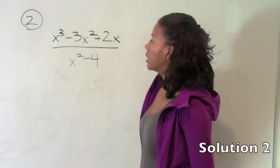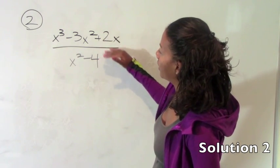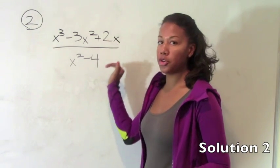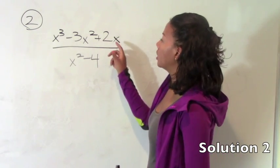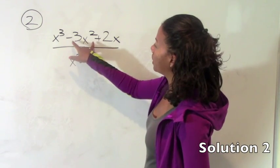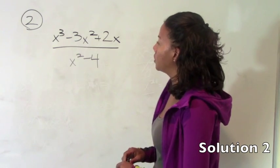Number two. Number two asks us to simplify the following expression. So the first thing you want to do is factor your numerator and denominator and look for the common factors because the common factors will cancel out.